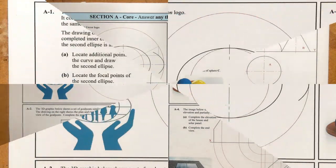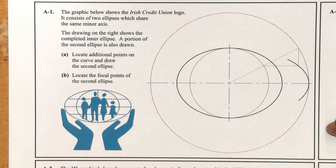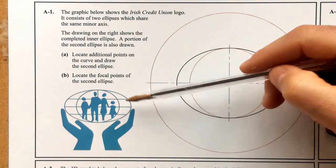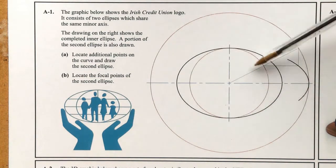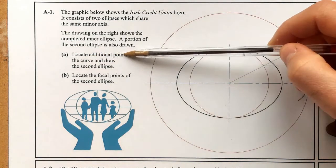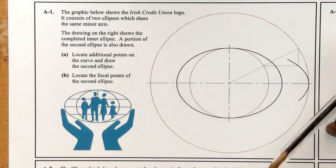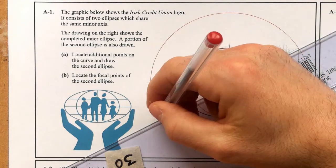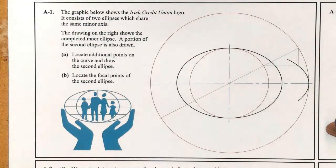For question A1, it says the graphic below shows the Irish Credit Union logo, which consists of two ellipses sharing the same minor axis. The drawing on the right shows the complete inner ellipse. Part A asks us to locate the additional points on the curve and draw the second ellipse, and then locate the focal points of the second ellipse. This relates back to the concentric circles method.